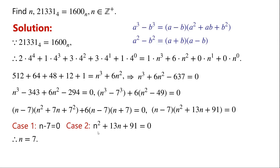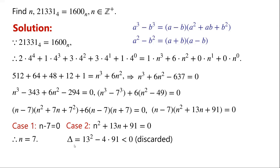Case 2: n squared plus 13n plus 91 equals 0. The discriminant is equal to 13 squared minus 4 times 91. The discriminant is less than 0, which means there are no real solutions. Since n is a positive integer, this case is discarded.